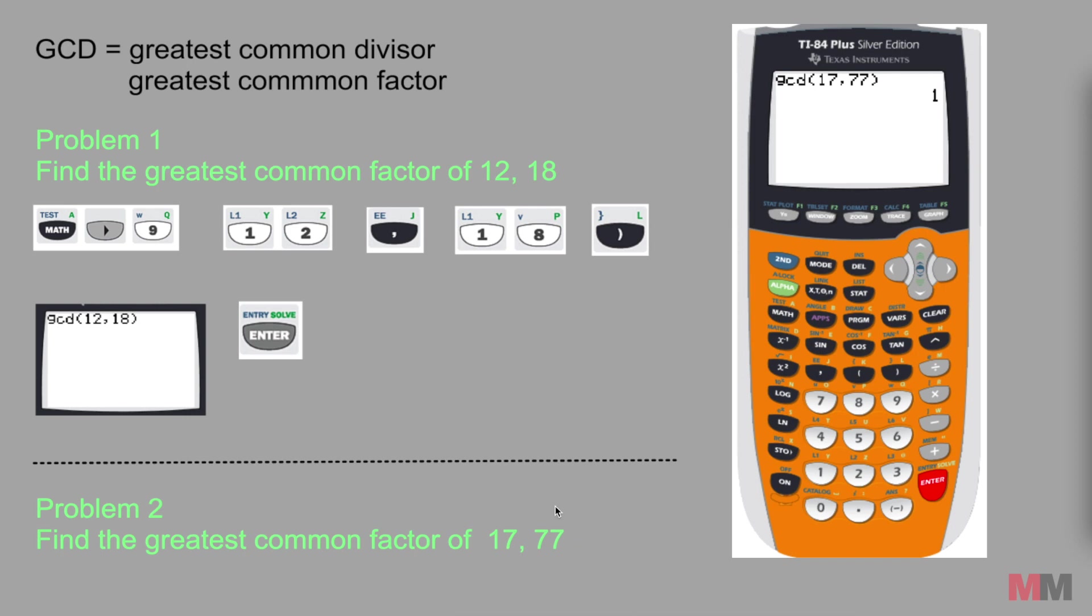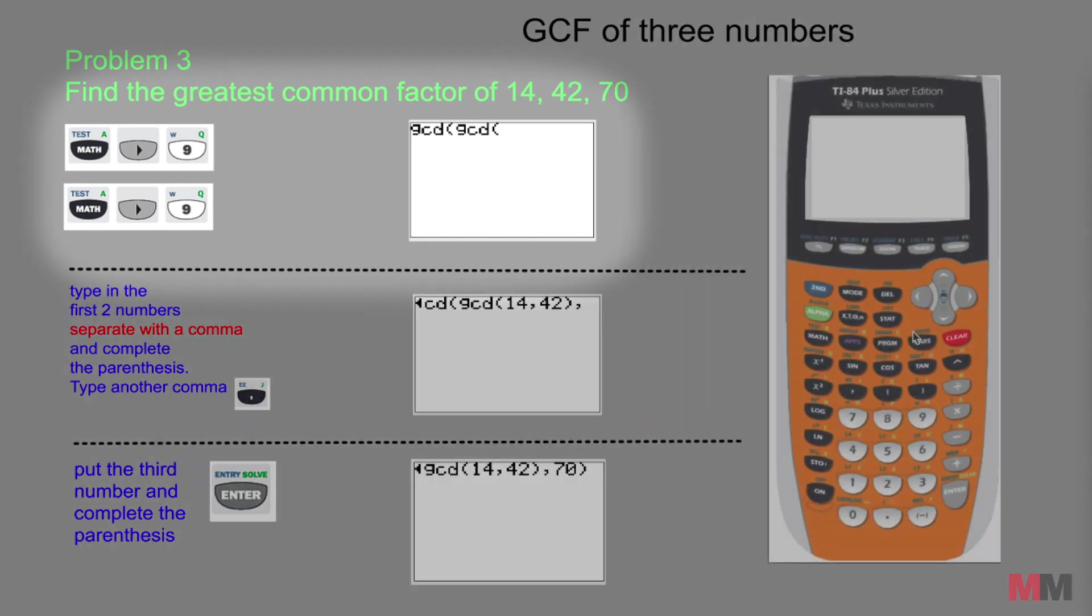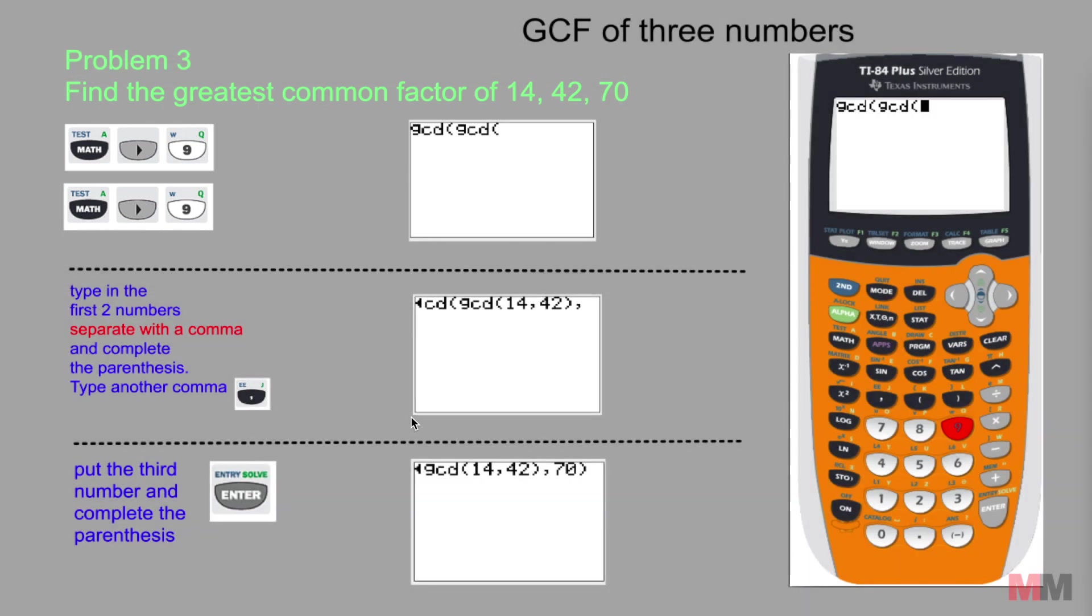Try something a little harder though in case you see 3 numbers. Problem 3: find the greatest common factor of 14, 42 and 70. What you're going to want to do is access the same keystrokes of math, hit the right arrow key and hit 9. But you're going to do that twice so that two GCDs show up. Math, right arrow, 9. So once you're at that step, let's move on to the second step.